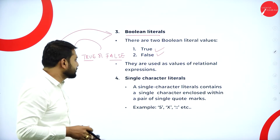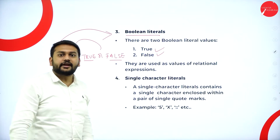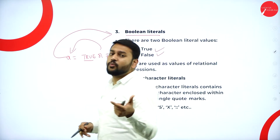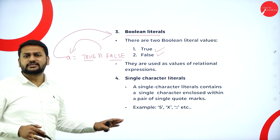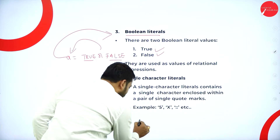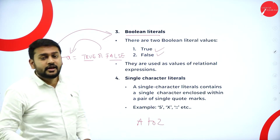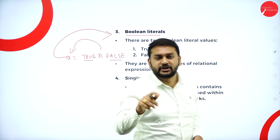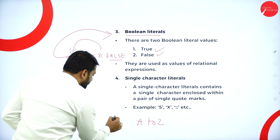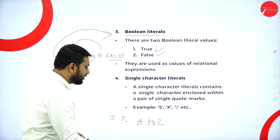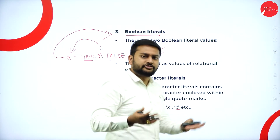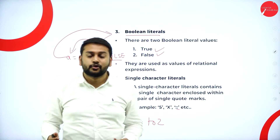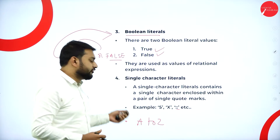The next type is single character literal — I can store only one character. When I say character, it doesn't mean only alphabets A to Z. Any single character from the keyboard counts — it can be a full stop, a digit like five, a percentage sign, a semicolon, or a colon. Any single character stored as a value in a variable is a character literal.